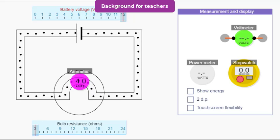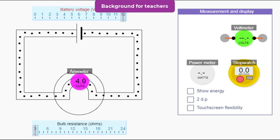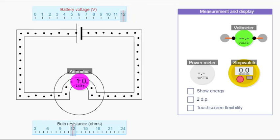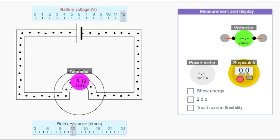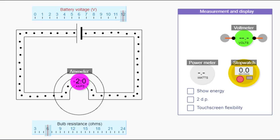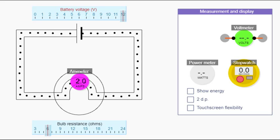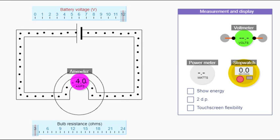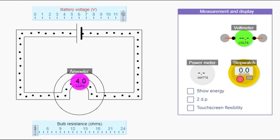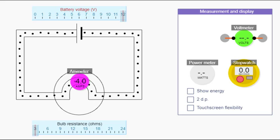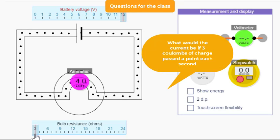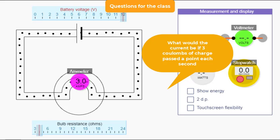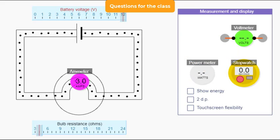What happens is that an ammeter measures the number of coulombs of charge passing through it each second. If one coulomb of charge passes a point each second, the current is one ampere. If two coulombs pass each second, the current is two amperes. If four coulombs pass each second, the current is four amperes. What would the current be if three coulombs pass each second? It would be three amperes.